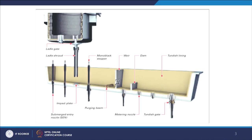Apart from that, you have many flow modifiers inside the tundish. The flow modifiers are in the shape of a weir, which comes from the top, and a dam, which comes from the bottom. These are basically flow modifiers used to alter the fluid flow inside the tundish. We will talk about the role of flow modifiers.